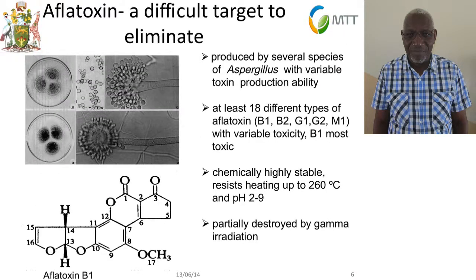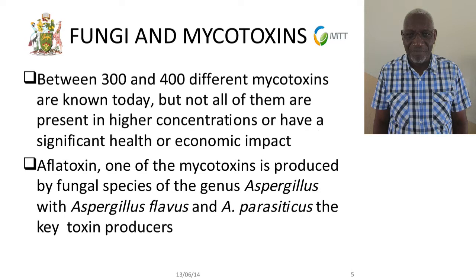There are between 300 and 400 different types of mycotoxins known today. Not all of them are very toxic, but some have toxicities at higher concentrations and significant economic impacts on lives. One of these is aflatoxin, the subject of our discussion today. It is produced by quite a number of species, but more commonly by Aspergillus — specifically Aspergillus flavus and parasiticus.